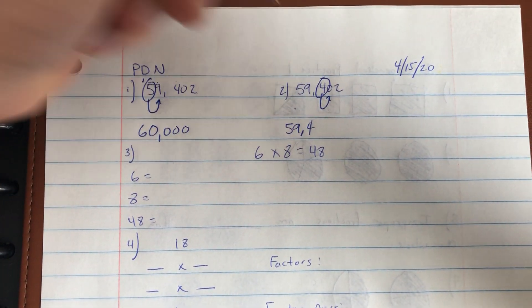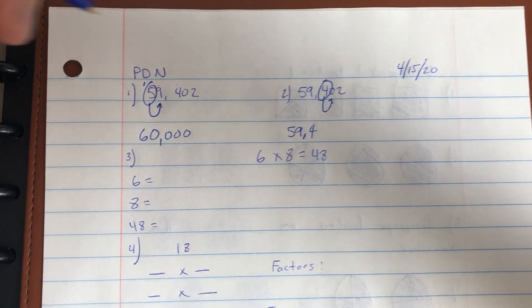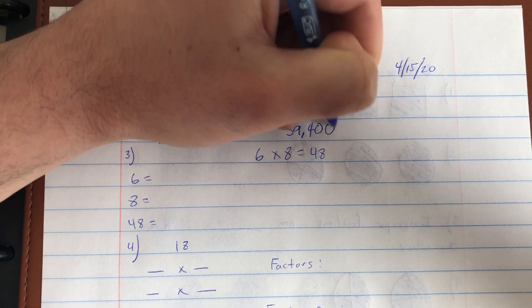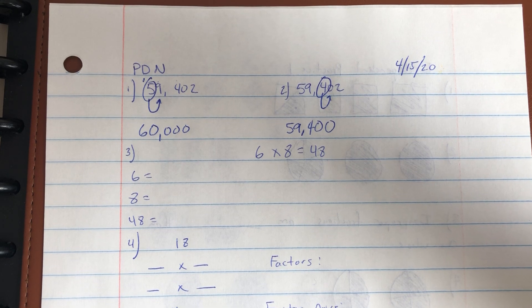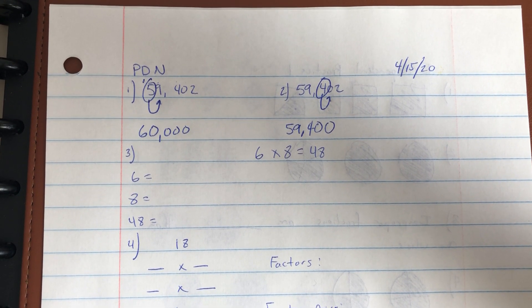My circle digit does not change because I'm rounding down, and the hundreds, or sorry, the tens, and the ones afterwards become a zero. So 59,402 rounded to the nearest thousands is 59,400.